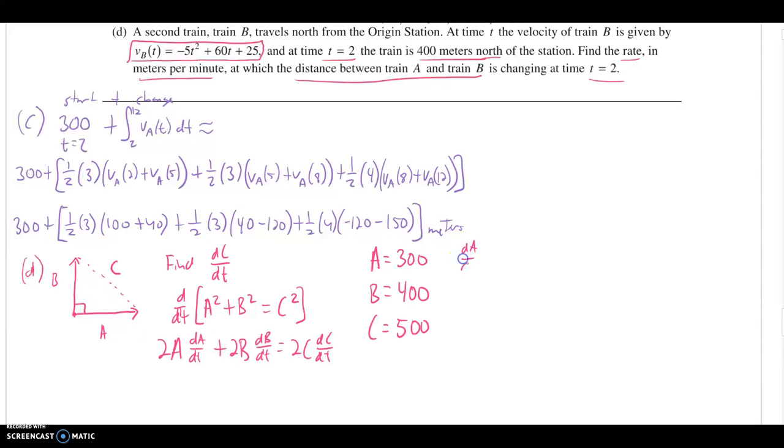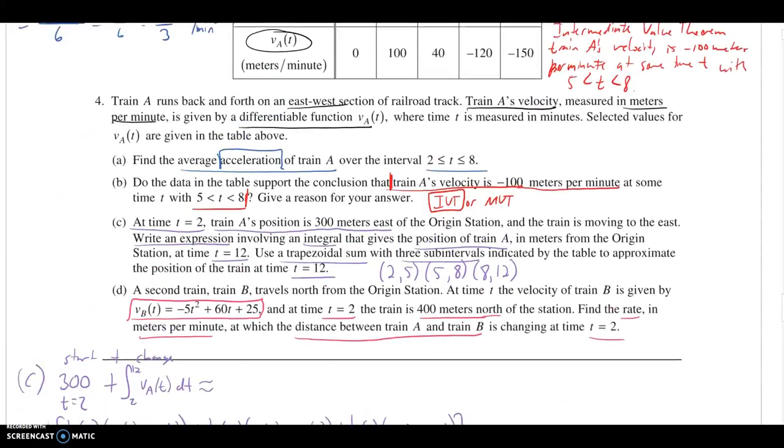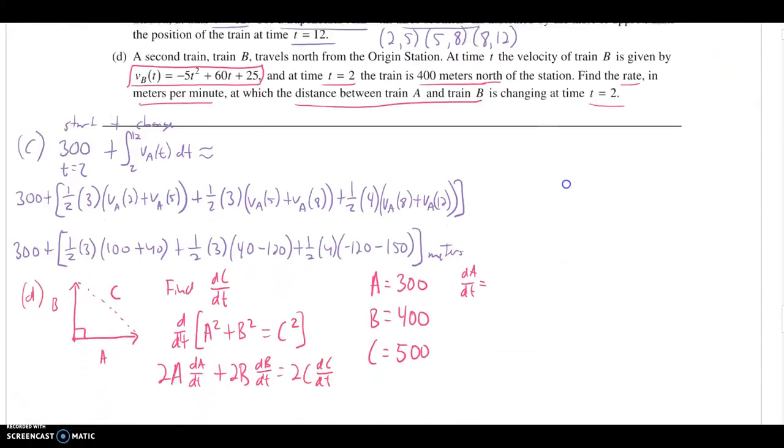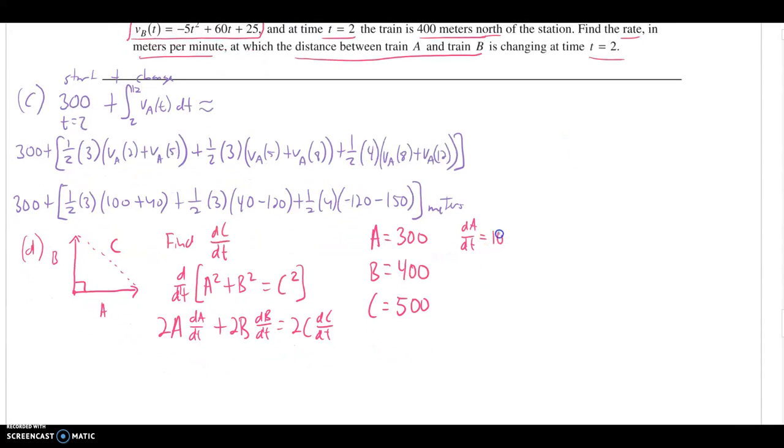The rate of change for train A at time two, that comes from our table back up top. And that is 100. I'll go back and remind myself that. Positive 100. The rate of change for B, or B's velocity, would come from VB of two. It would come from plugging two into that brand new function we had. That would be, let's see, negative five times four, negative 20, plus 120 is going to be 100. This would be 125. And now we can plug those values into our derivative equation.